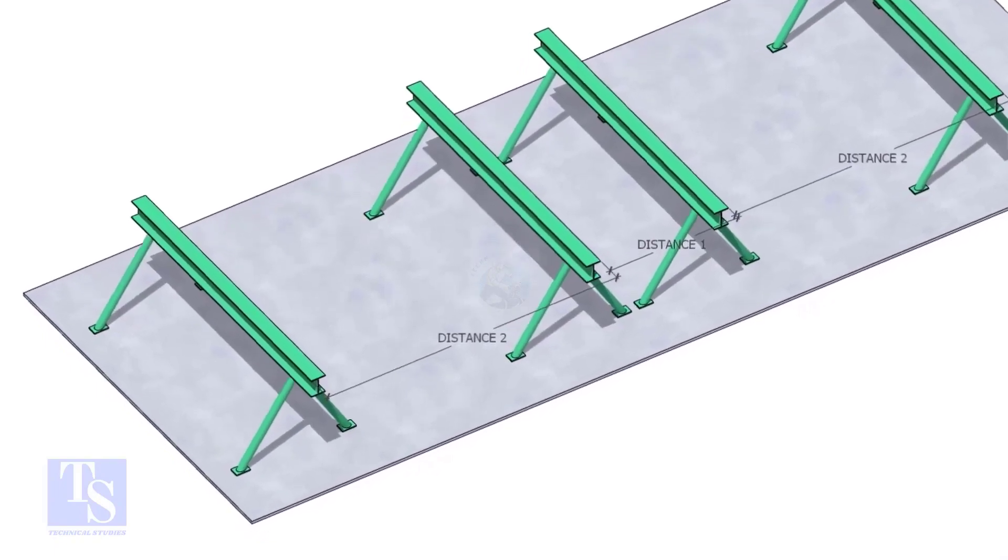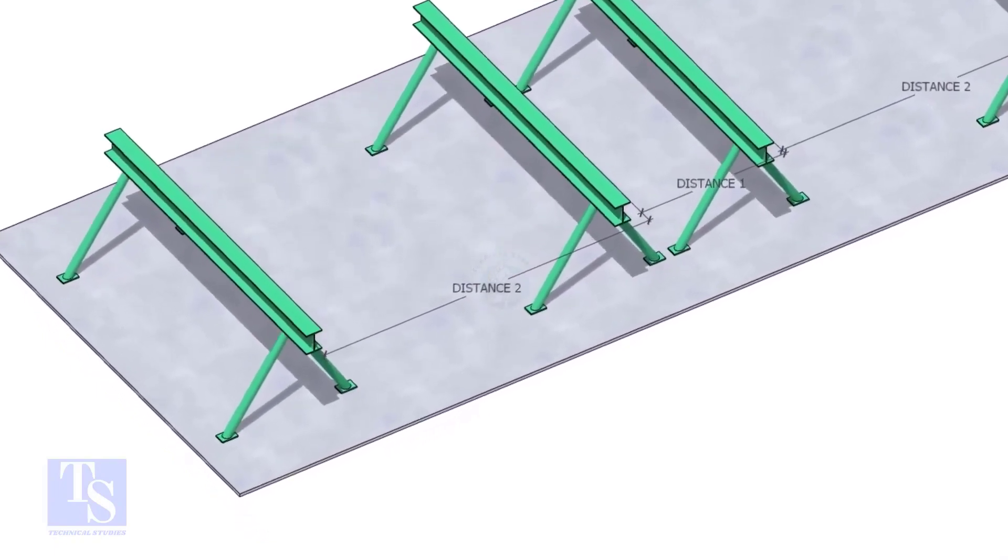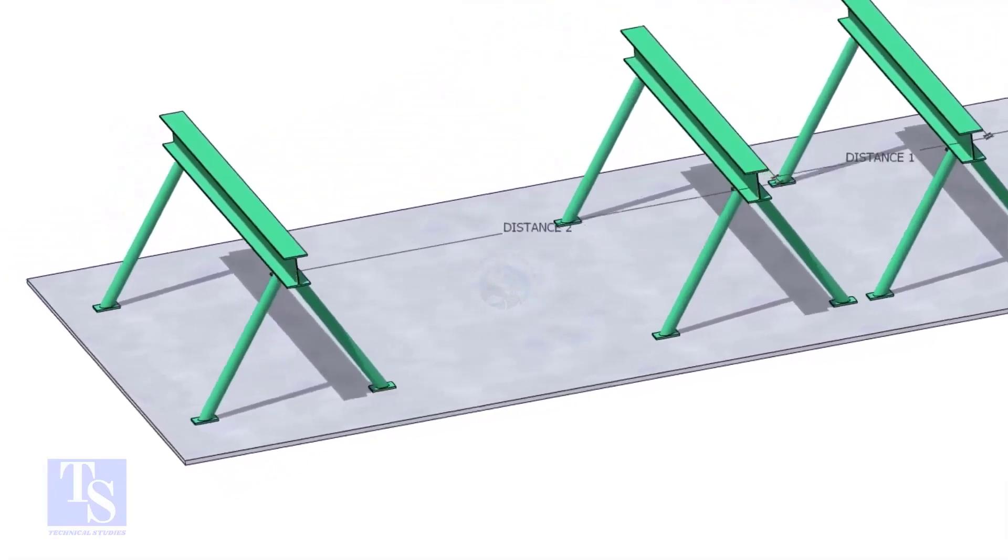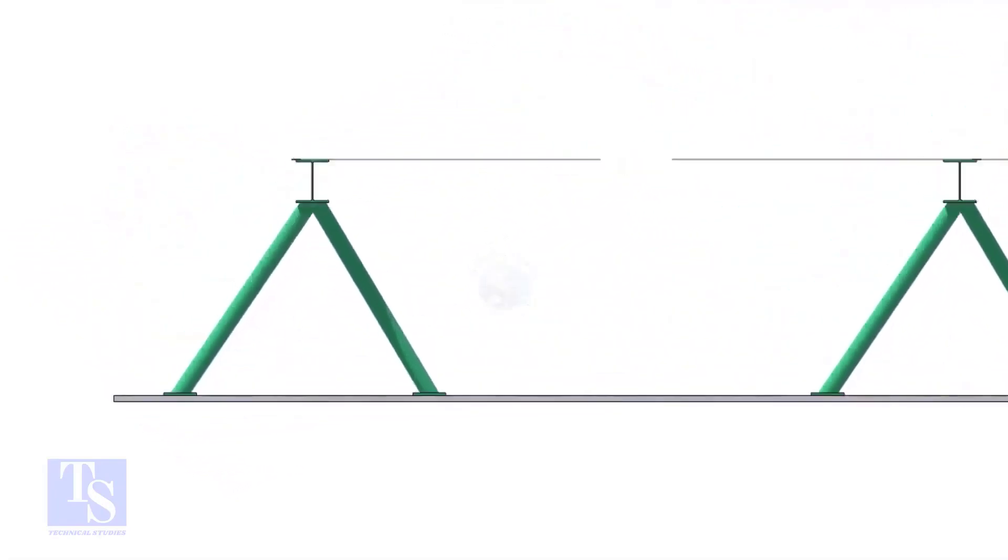Distance 1 shall be 1 meter to 1.2 meters. And distance 2 shall be 2 to 2.5 meters, less than the random pipe.